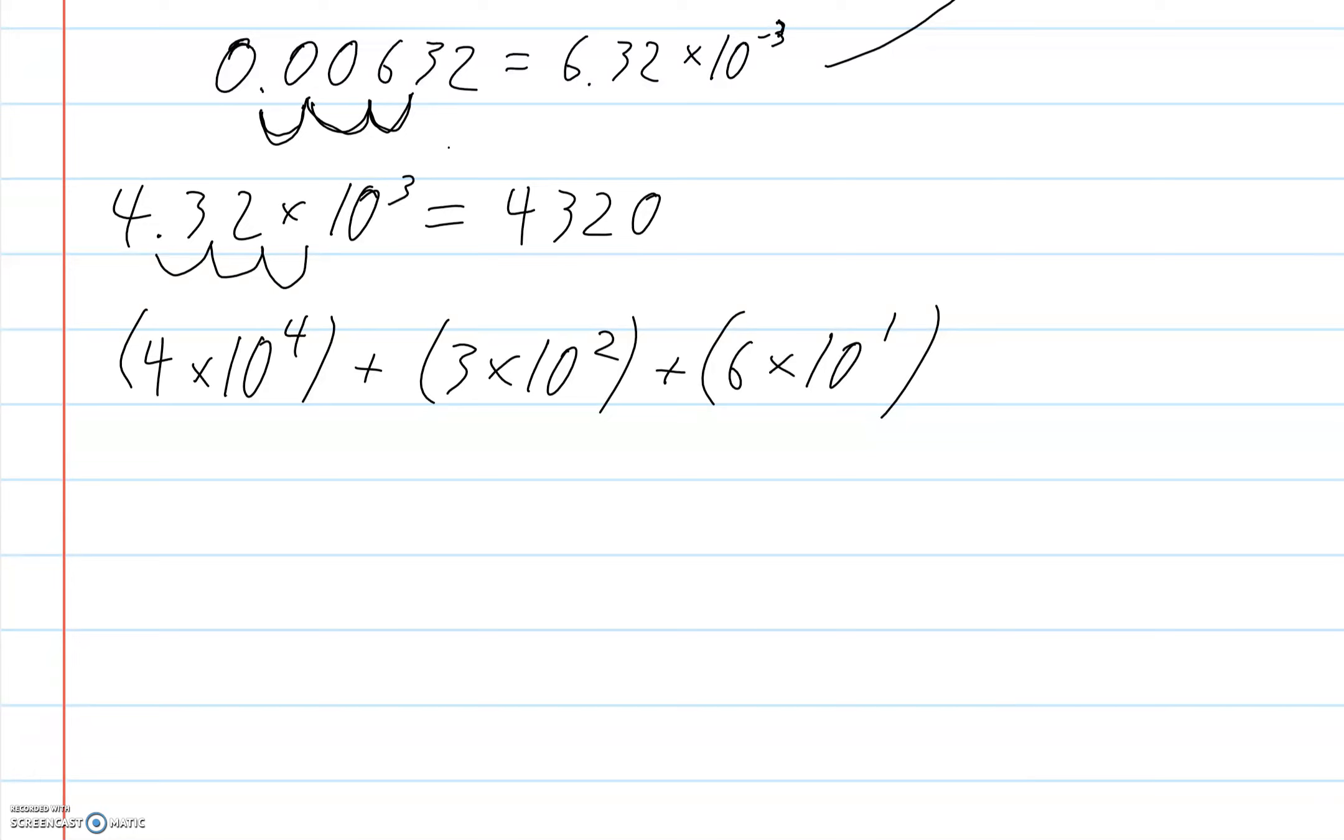Now, what you could do is you could literally do the math and get 4 times 10 to the 4, so we add 1, 2, 3, 4 zeros, and 3 times 10 to the 2, 2 zeros, 6 times 10 to the 1, 1 zero. So you could do that math and then add them up. But you can also recognize this amazing fact, and this is our place value system.